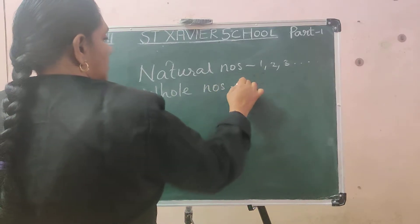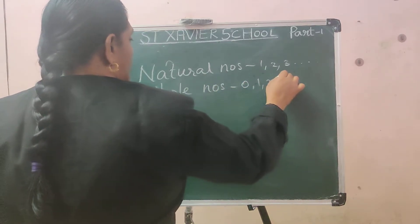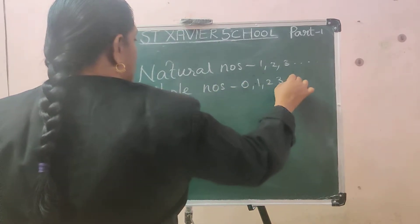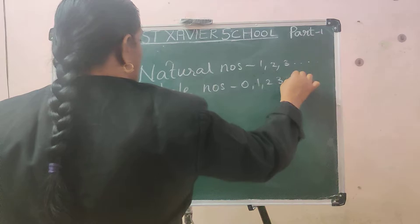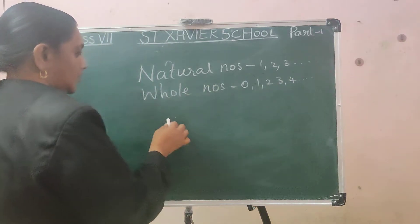Whole numbers are 0, 1, 2, 3, etc. Along with the natural numbers, if you keep 0 in the front, then it will become whole numbers.